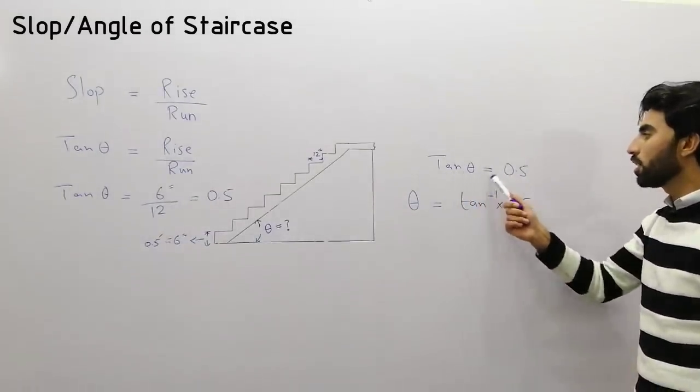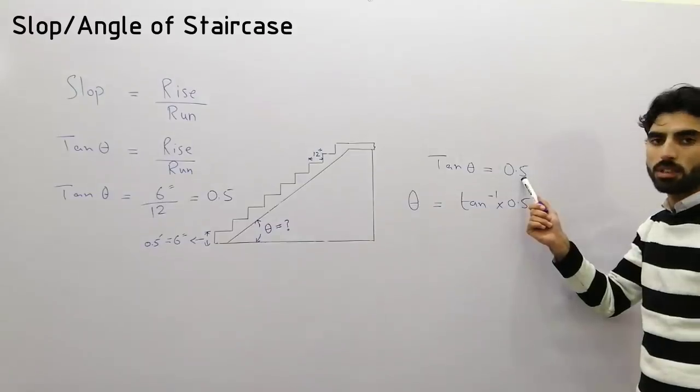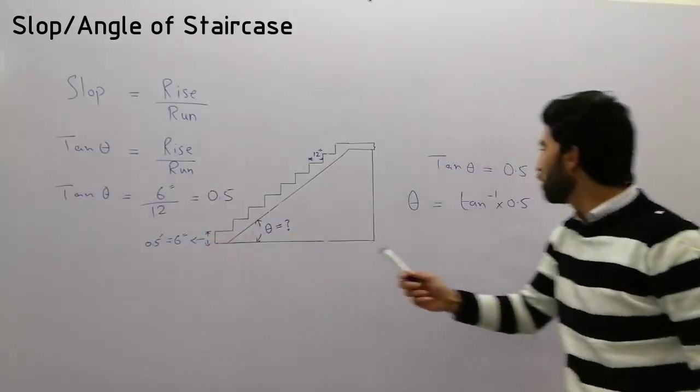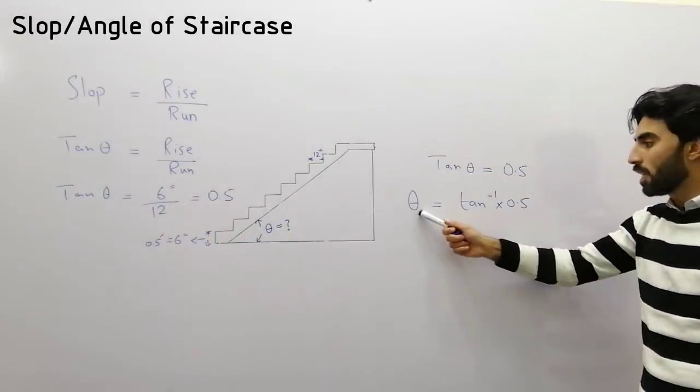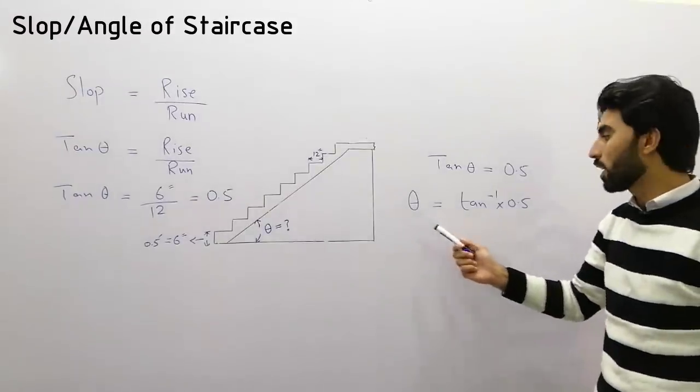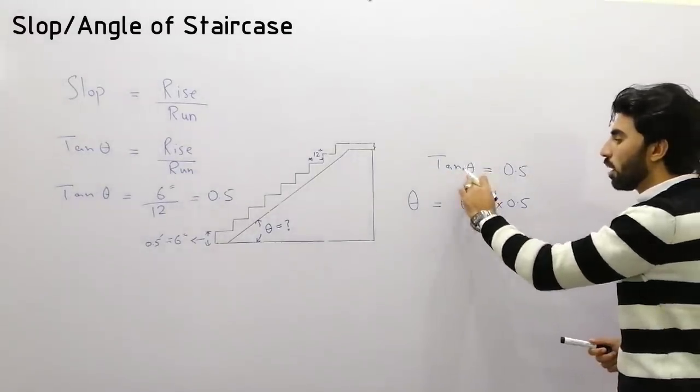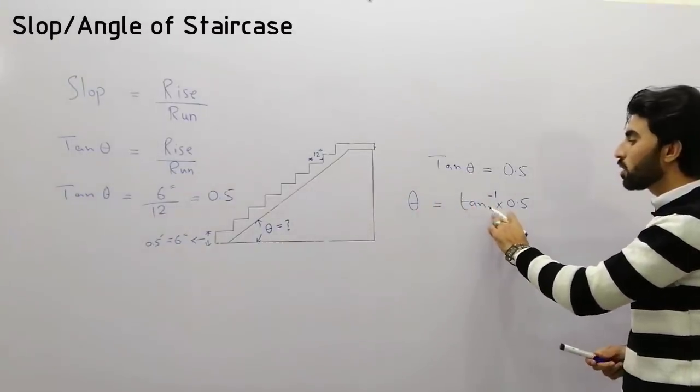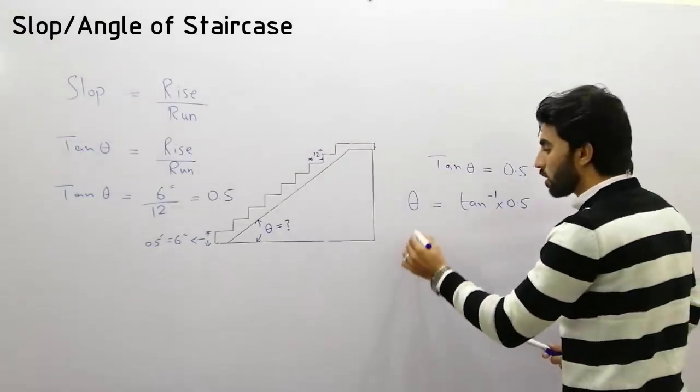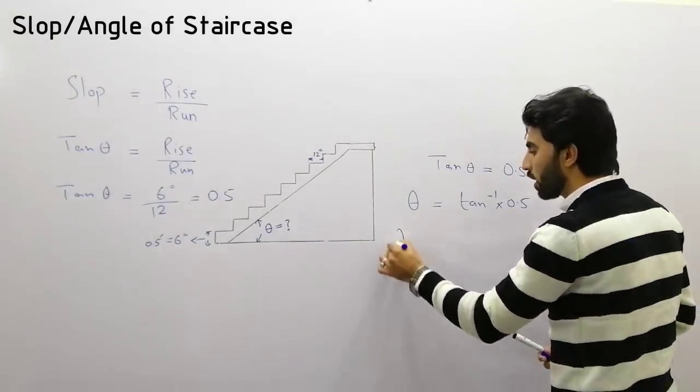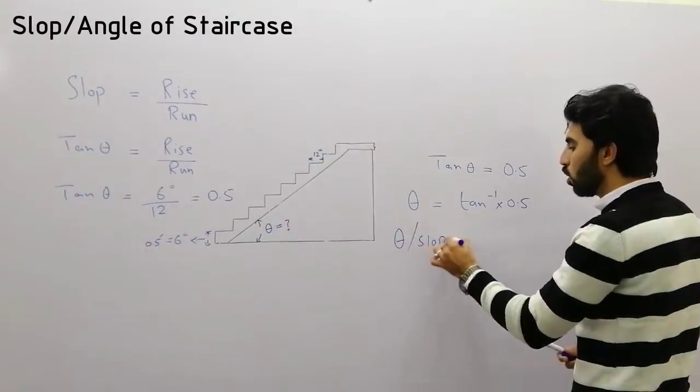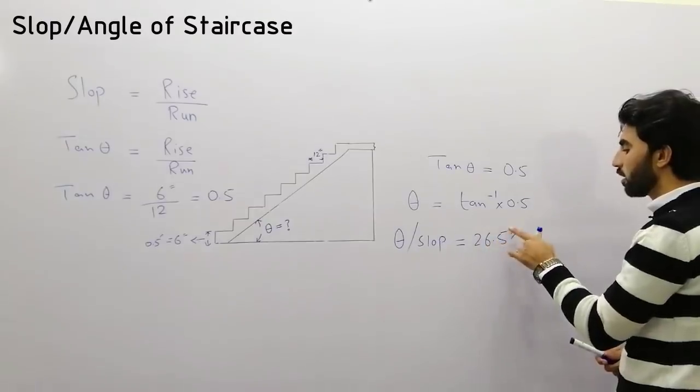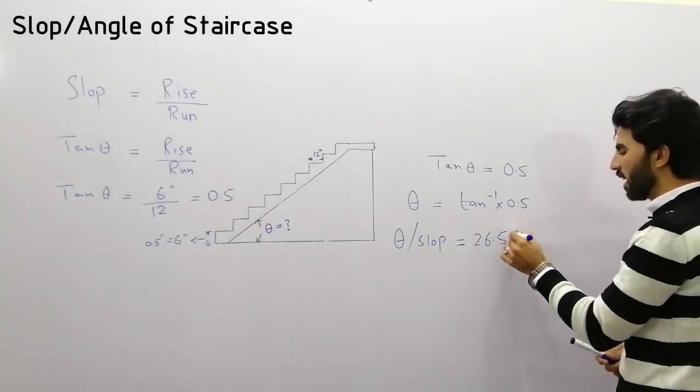Since tangent theta equals 0.5, to find the angle we use tangent inverse. The tangent becomes tangent inverse when we solve for theta. Tangent inverse of 0.5 gives us the slope, which equals 26.58 degrees.